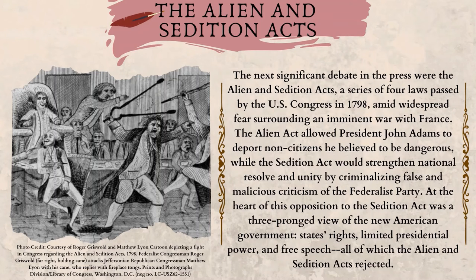The Alien and Sedition Acts. The next significant debate in the press were the Alien and Sedition Acts, a series of four laws passed by the U.S. Congress in 1798 amid widespread fear surrounding an imminent war with France. The Alien Act allowed President John Adams to deport non-citizens he believed to be dangerous, while the Sedition Act would strengthen national resolve and unity by criminalizing false and malicious criticism of the Federalist Party. At the heart of this opposition to the Sedition Act was a three-pronged view of the new American government: states' rights, limited presidential power, and free speech — all of which the Alien and Sedition Acts rejected.